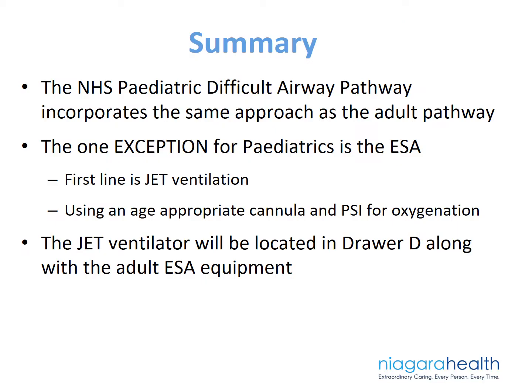In summary, our Niagara Health System Pediatric Difficult Airway Pathway incorporates the same A, B, C, and D approach as our adult population. The one exception is that for Plan D — the surgical airway in our pediatric population — we use jet ventilation as first line, using an age-appropriate cannula and PSI clearly marked with the kit. The jet ventilator is located in Drawer D along with the adult emergency surgical airway equipment, while all other components for the pediatric pathway are in the code pink cart along with the Braslow tape.